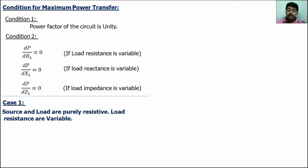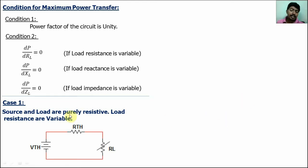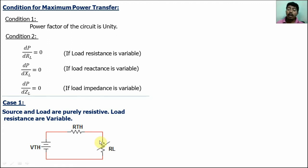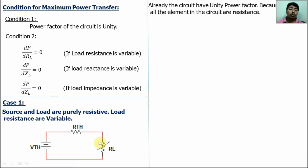Case 1: the source and load are pure resistance, and the load resistance is variable. Let us take this circuit — the third circuit is chosen for easiest analysis. Here the source and load are pure resistance, and the load resistance is variable. For this case, the first condition requires the power factor of the circuit to be unity. Since the circuit has no inductive or capacitive components — all elements are resistive — the circuit already has unity power factor. So no adjustment is needed; the power factor is already unity.